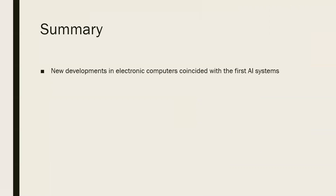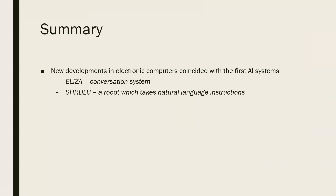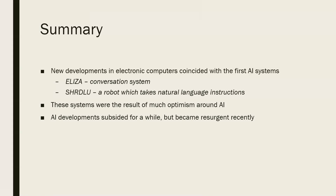To summarize, we see new developments in electronic computers occurring in the 1940s following World War II, coinciding with the development of the first AI systems and initial hype about artificial intelligence. We saw how this hype led to the development of the ELIZA system, which could simulate human conversation, and Shrdlu, a virtual robot which could take commands and answer questions using natural language. These systems were very rudimentary but laid the foundation for important advancements in AI. This optimism subsided after the 1950s and 60s but has become resurgent recently — and that's what we'll be talking about in the next lesson.